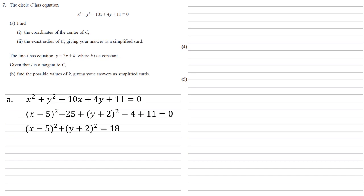Moving those spare numbers over to the right, we get x minus 5 squared plus y plus 2 squared equals 18.